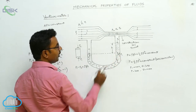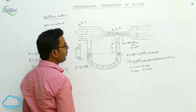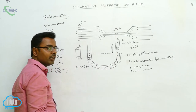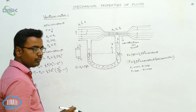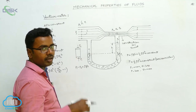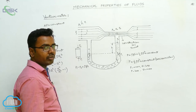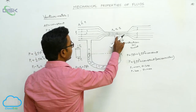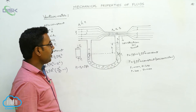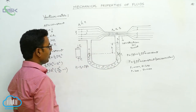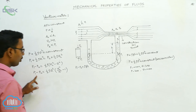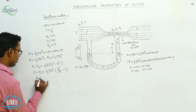The liquid rises in the second limb of the manometer because the pressure P2 in the constriction region is less. When pressure decreases, the liquid is sucked up — just like drinking juice through a straw: you suck air out, pressure drops, and liquid rises. Here, the liquid rises to height H due to the pressure difference in both limbs, so P1 minus P2 equals rho*g*H.